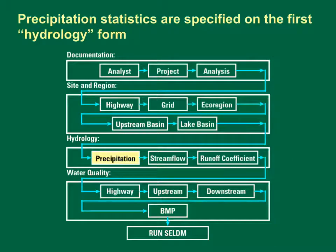This schematic diagram shows the flowchart for entering input data and for running a SELDM analysis. Each labeled box on the flowchart is a form. The forms are grouped into categories: documentation, site and region, hydrology, and water quality. Precipitation statistics are specified on the first hydrology form in the interface, which is also the ninth form in the progression from the analyst form to the run SELDM form. We will work with the precipitation forms in our class exercise.